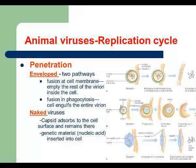In the phagocytosis pathway, the entire enveloped virus is engulfed by the host cell. For naked viruses, the method is very similar to fusion at the cell membrane — as the naked virus crosses the cell membrane, it leaves the capsid on the surface, and only the nucleic acid is inserted into the cytoplasm.